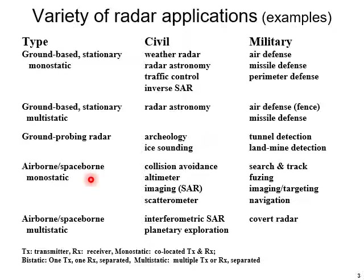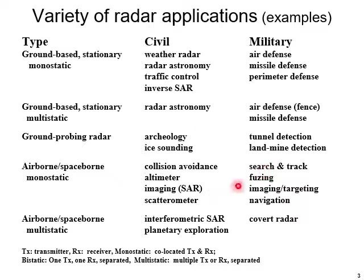If the radar is placed in some flying object like an airborne or space-borne system, and the radar is monostatic in nature, we have applications such as collision avoidance, altimeter — which is very essential for any flying object — imaging radar which produces an image of the target, and scatterometer. For military counterparts, we have search and track radar, fuzing, imaging and targeting, and navigation. For airborne and space-borne multi-static radar systems, civil applications include interferometric synthetic aperture radar and planetary exploration, while military applications include covert type radar.